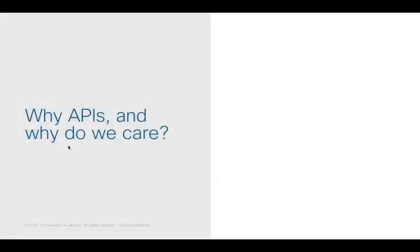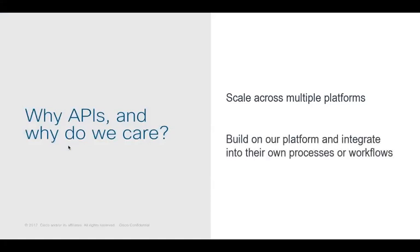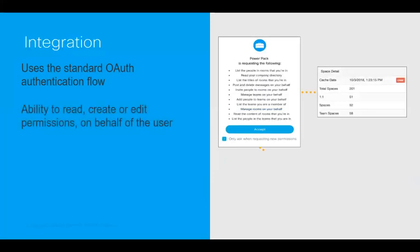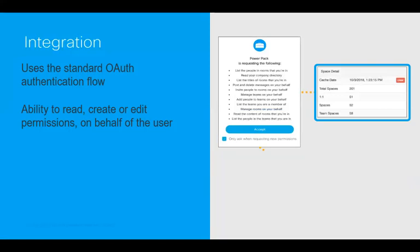Now let's take a deeper look at the underlying technology making this type of workflow possible. REST APIs are common among applications these days. They're important from a Cisco internal development perspective because they allow us to scale across multiple platforms. They are important for our customers because they allow them to build on our platform and integrate into their own processes or workflows. From a technical and developer perspective, an integration with WebEx for developers has a specific meaning. It involves an application that uses the standard OAuth authentication flow to grant a third-party app the ability to read, create, or edit permissions on behalf of the user. An end user would see a consent page showing what permissions that app is requesting. This is an example of a WebEx PowerPack app requesting permissions such as read your company directory. The end user clicks accept to grant the permissions. The app is then able to gain insight into the user's platform for doing things such as getting metrics data, as you can see here.